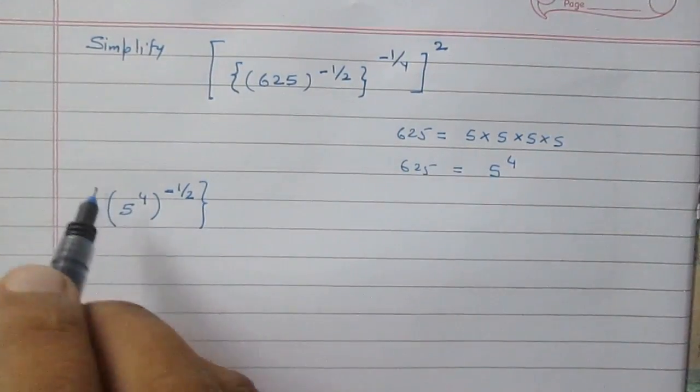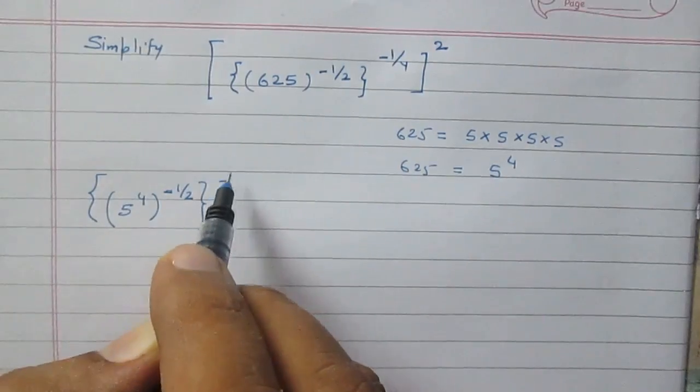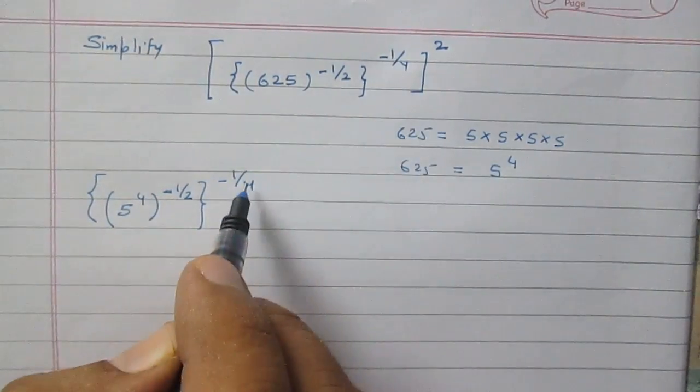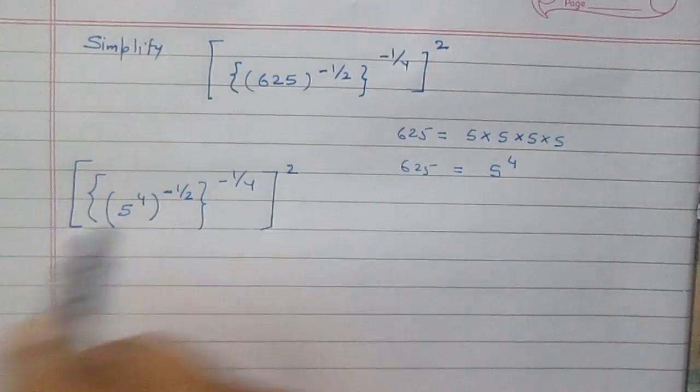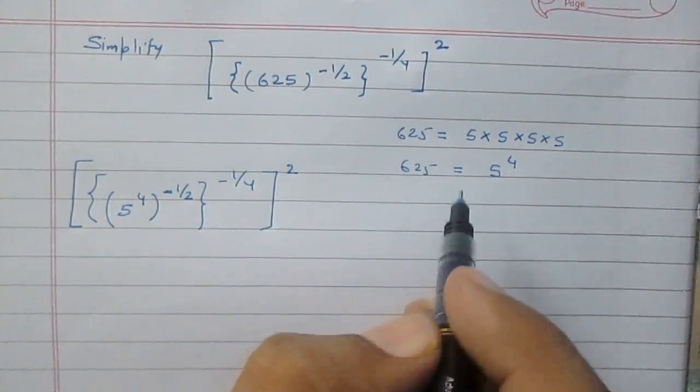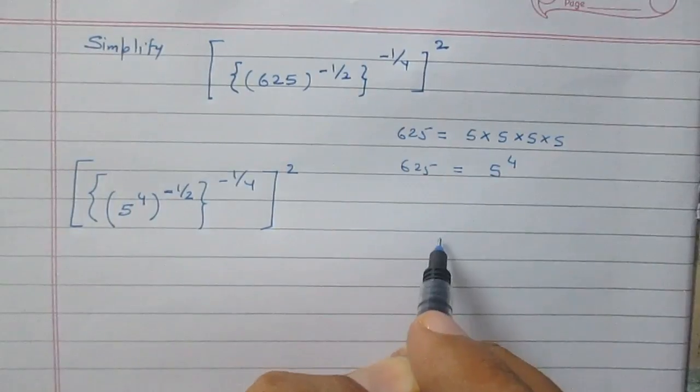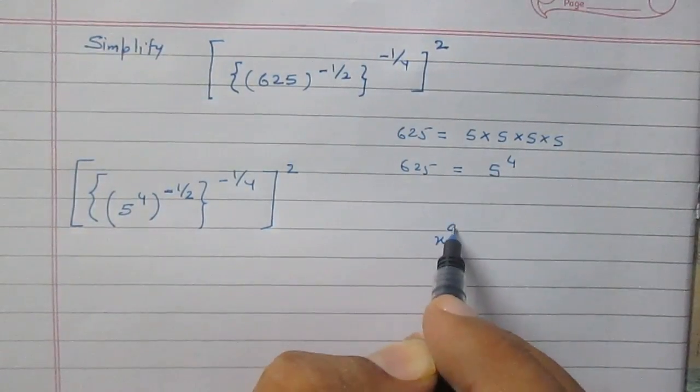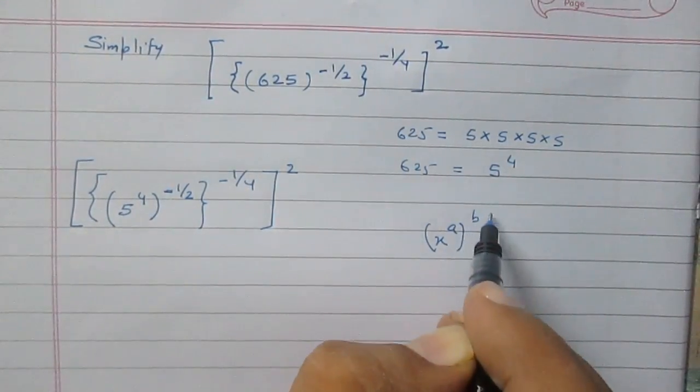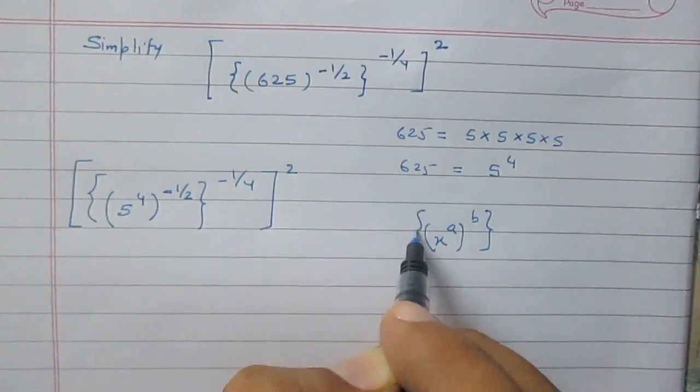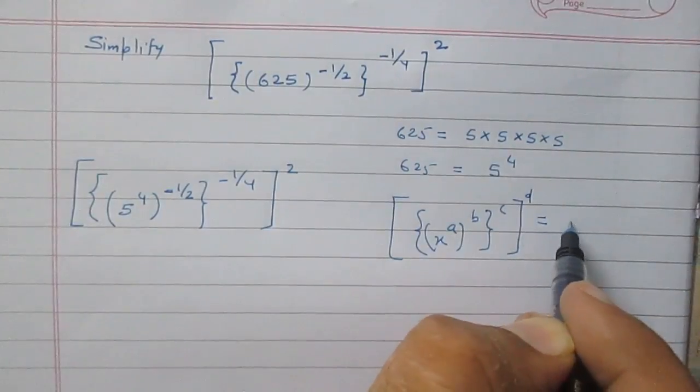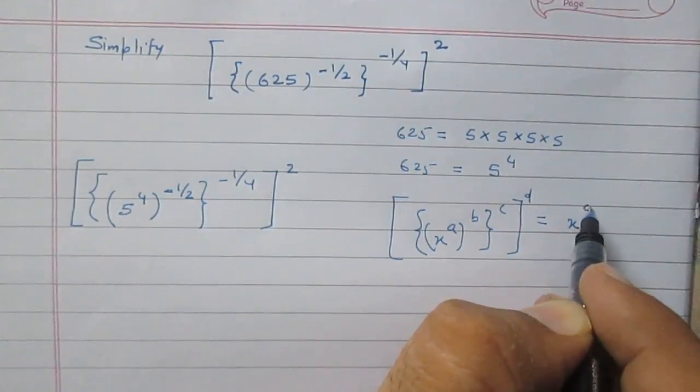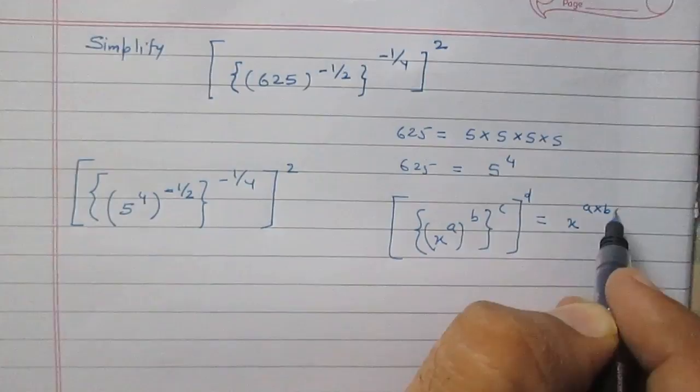According to the laws of exponents, we can write x raised to the power a, raised to the power b, raised to the power c, whole raised to the power d, as x raised to the power a times b times c times d.